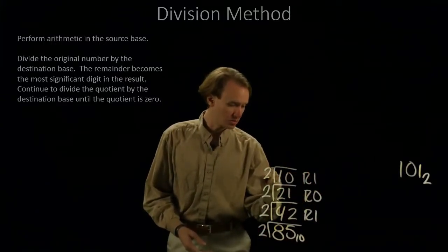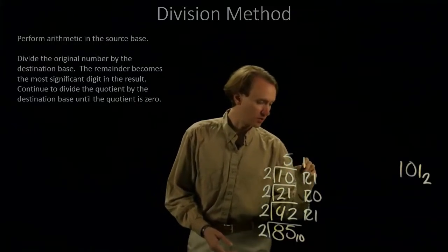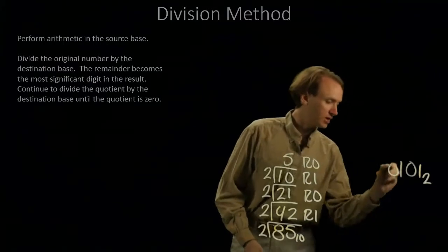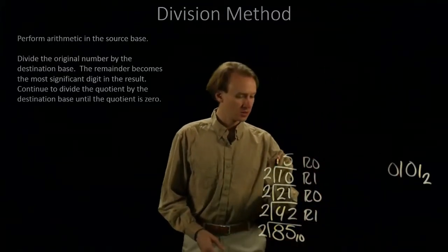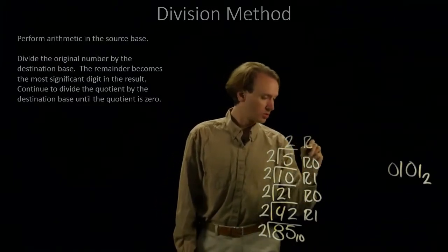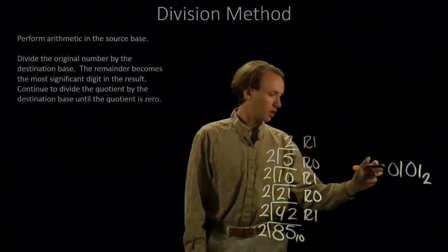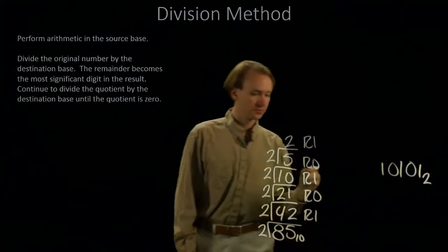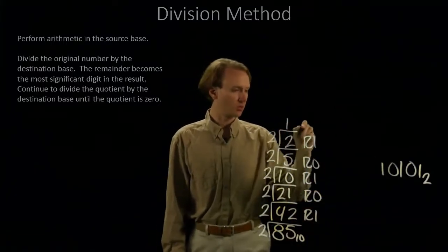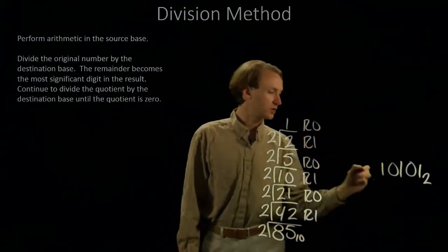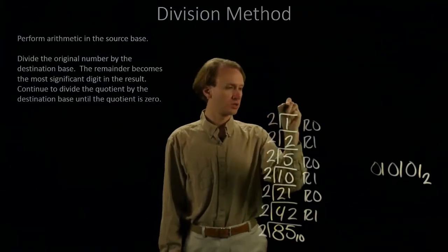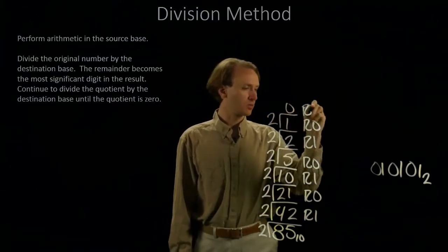10 divided by 2 gives me 5, remainder 0. I'll copy down the remainder. 5 divided by 2 gives me 2, remainder 1. I'll copy over the 1. 2 divided by 2 gives me 1, remainder 0. And 1 divided by 2 gives me 0, remainder 1.